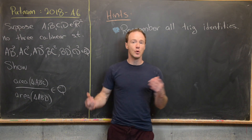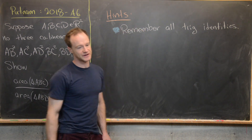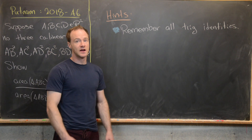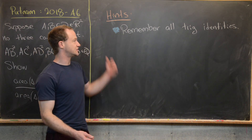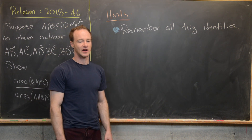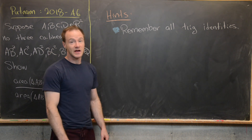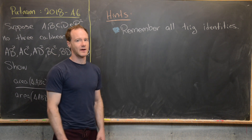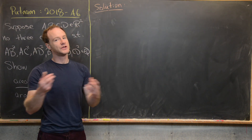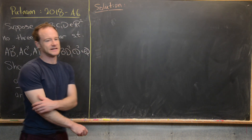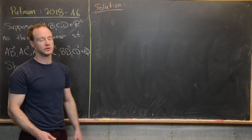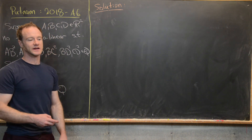We're going to use a trigonometric approach to this problem in this video. My hint for you is to remember a bunch of your trig identities — that'll be helpful. So maybe give this problem a go using trigonometry, and we'll come back with a solution. Hopefully you dusted off all your trig identities and made some headway, so now we're going to go ahead and look at a solution.